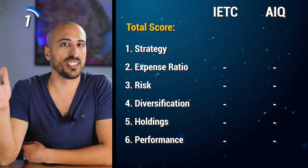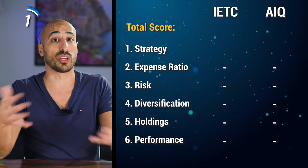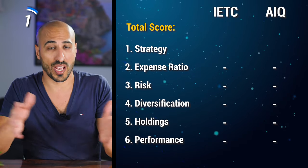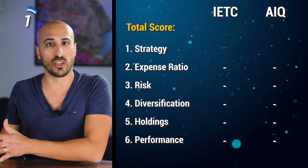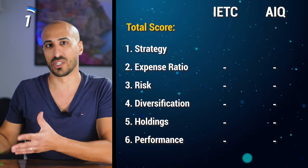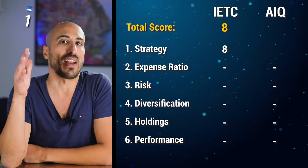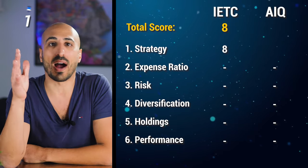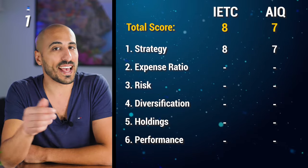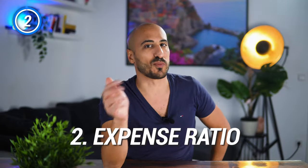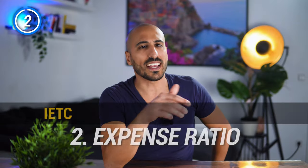Since IETC offers more diversification across US tech sectors while AIQ takes a deeper dive into only the AI space, I'm going to give eight points to IETC and seven points to AIQ. Next up, we have the expense ratio.